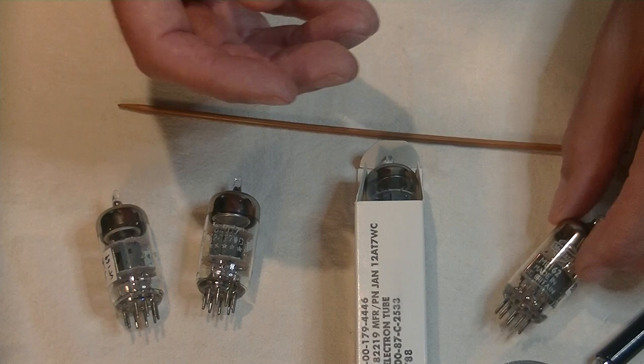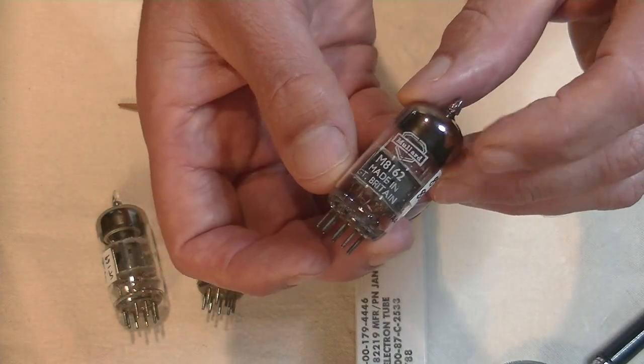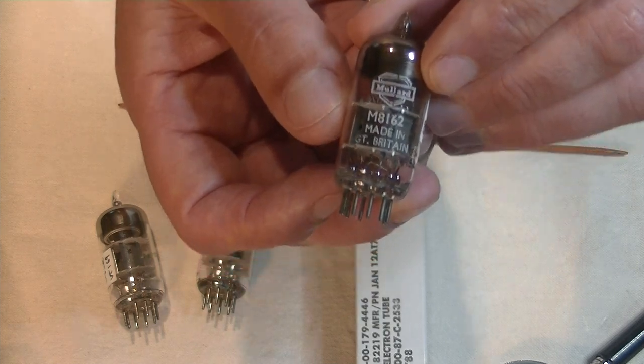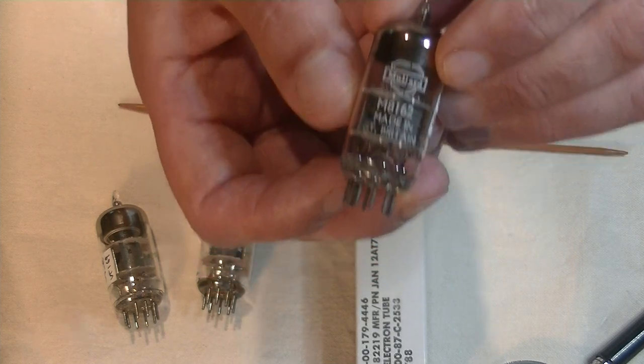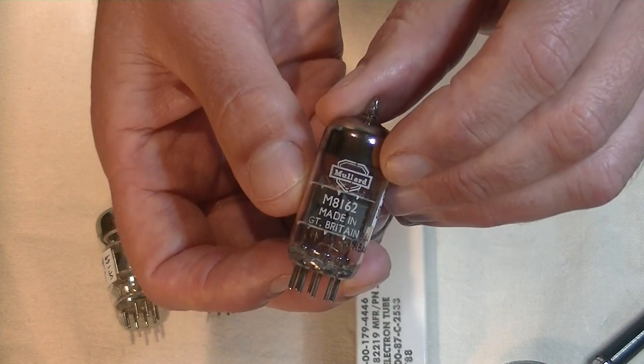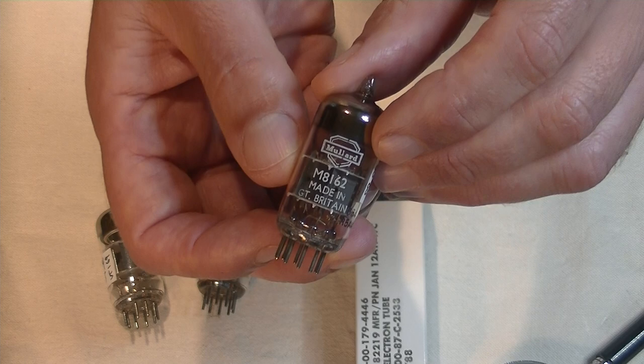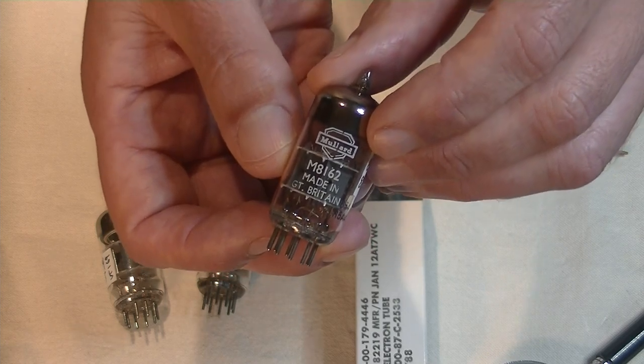So up first is a mil-spec version of the 12AT7, a Mullard 8162. What do I mean when I say mil-spec? Well, that's short for military specification. Normally, that means more robust construction, longer life, and tighter quality control.